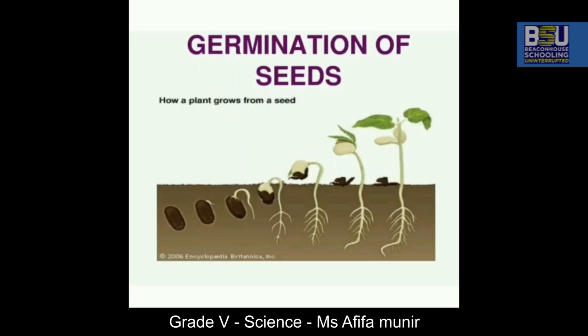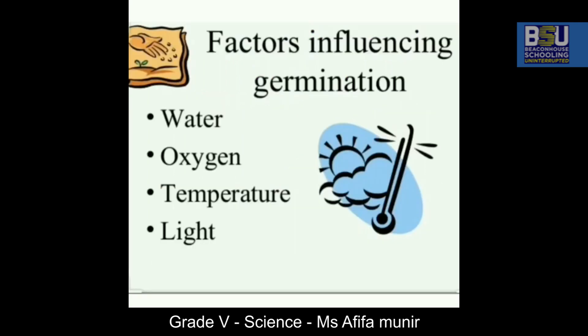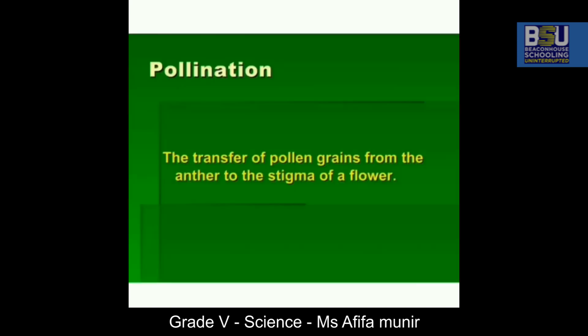When you look at the germination of a seed, you can see there's a small seed inside the soil, then it starts growing its roots first, then it comes out. There are different factors that influence germination: seeds need water, the right amount of oxygen, temperature, and light for themselves to grow and start germinating. These factors are really very important for the seed to start growing.